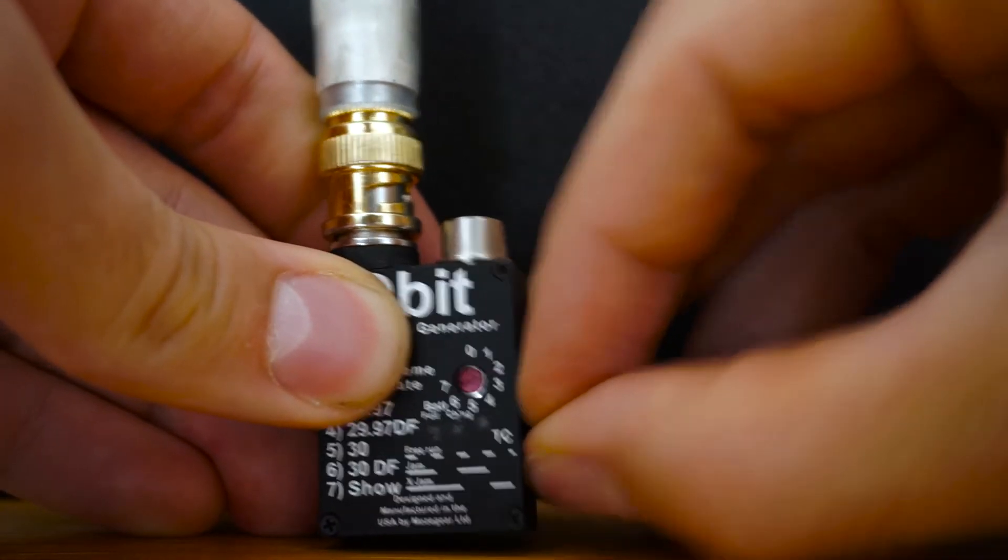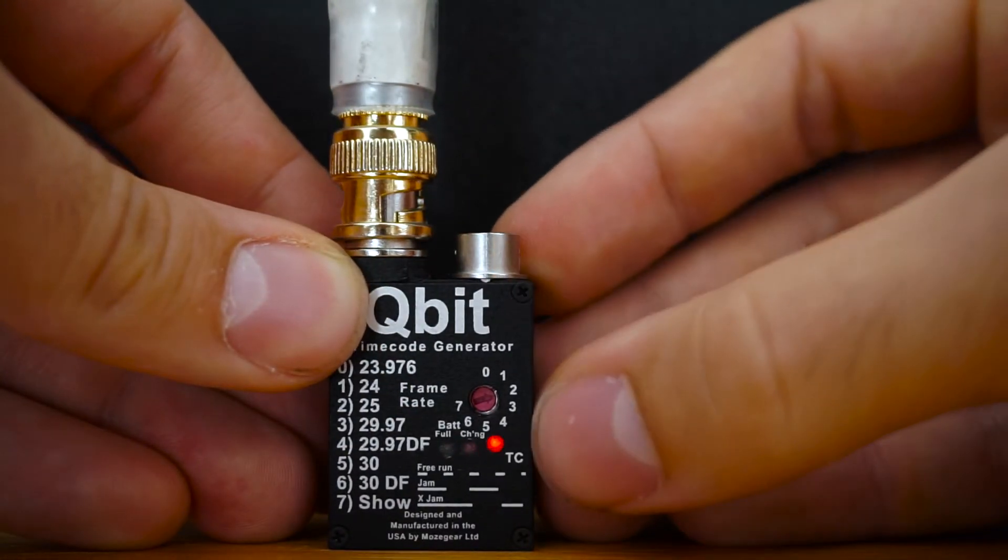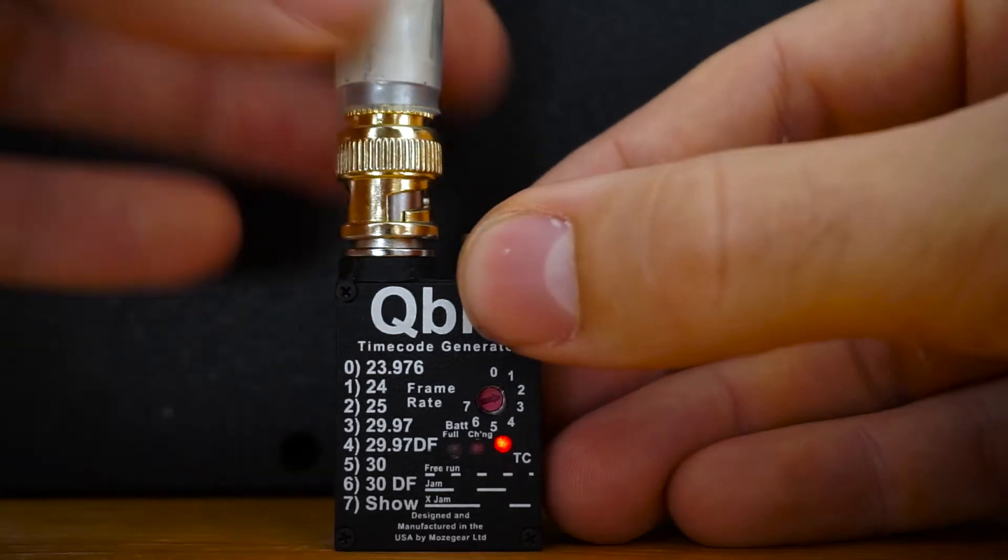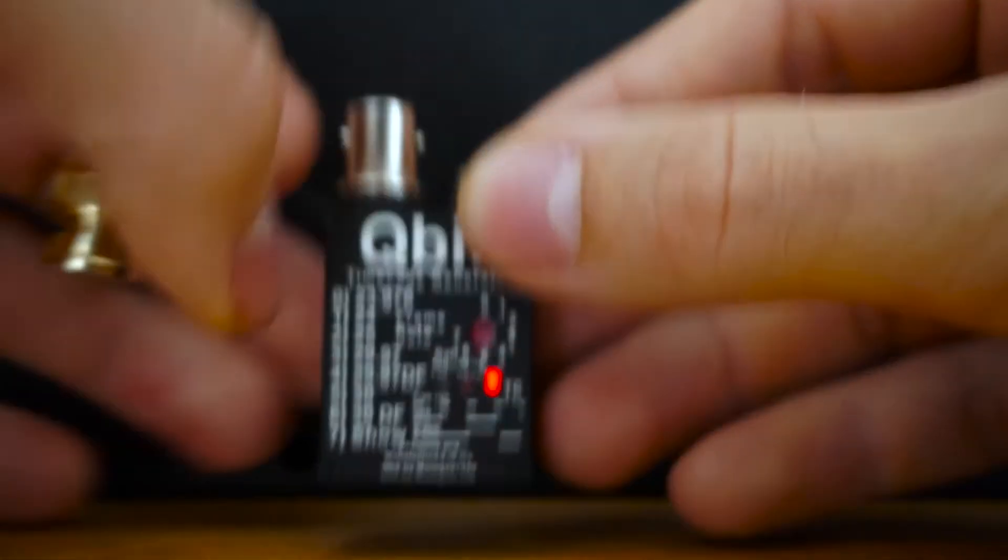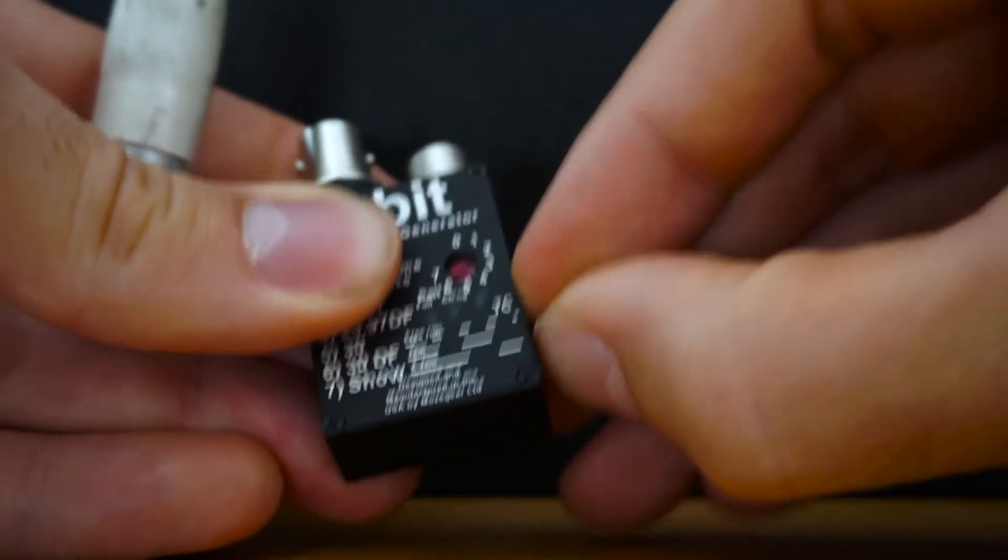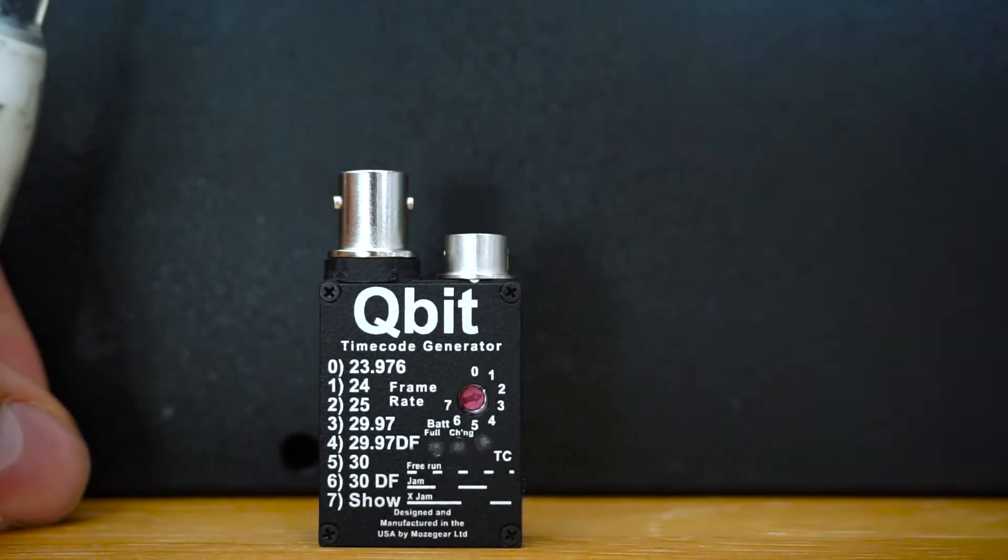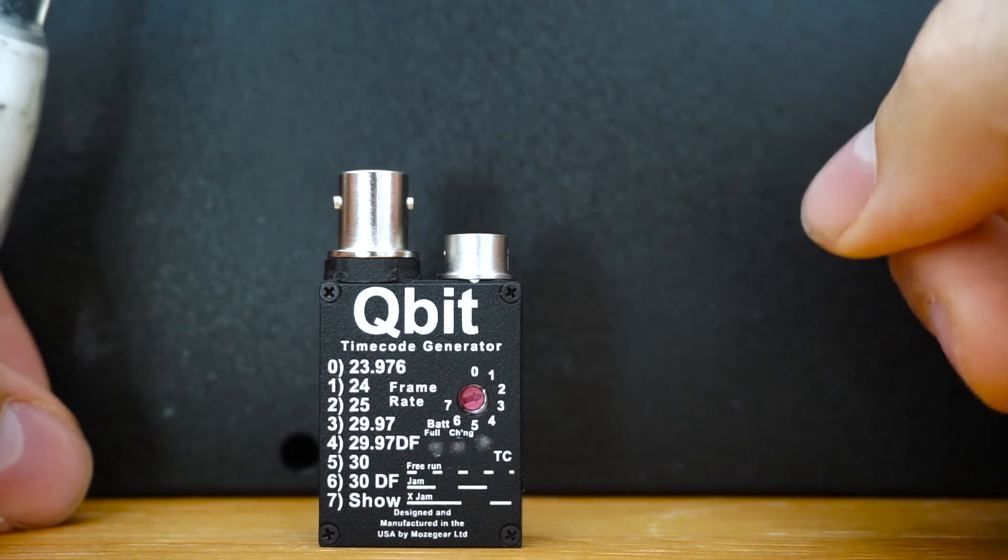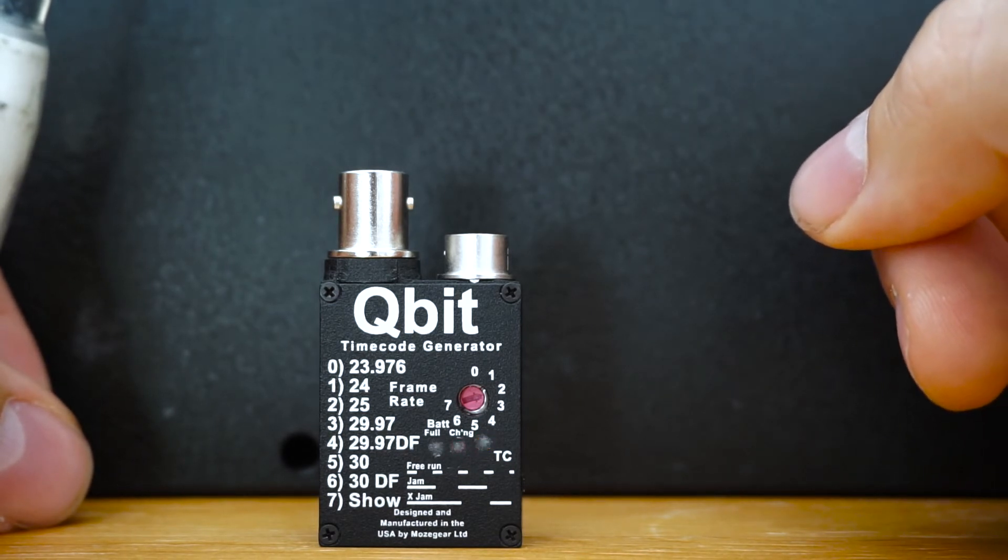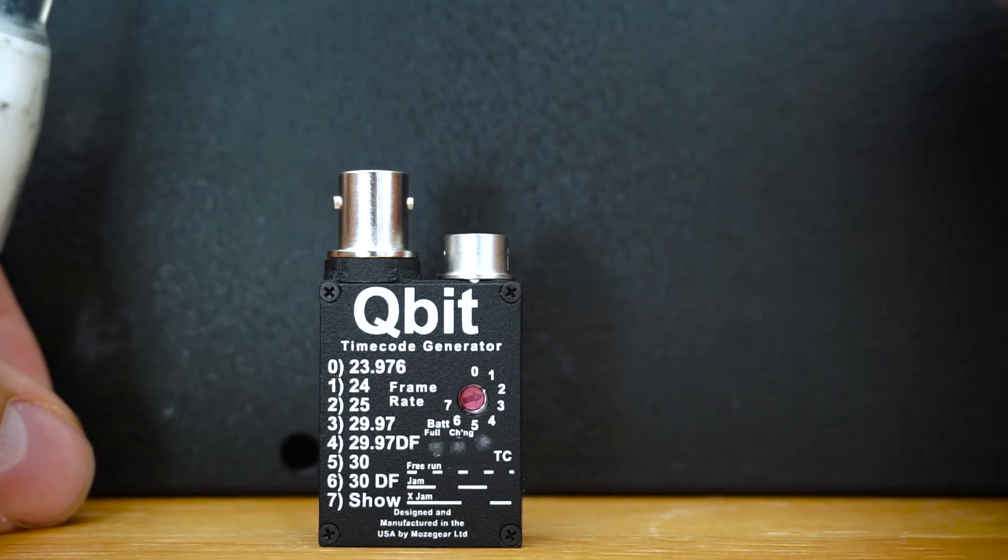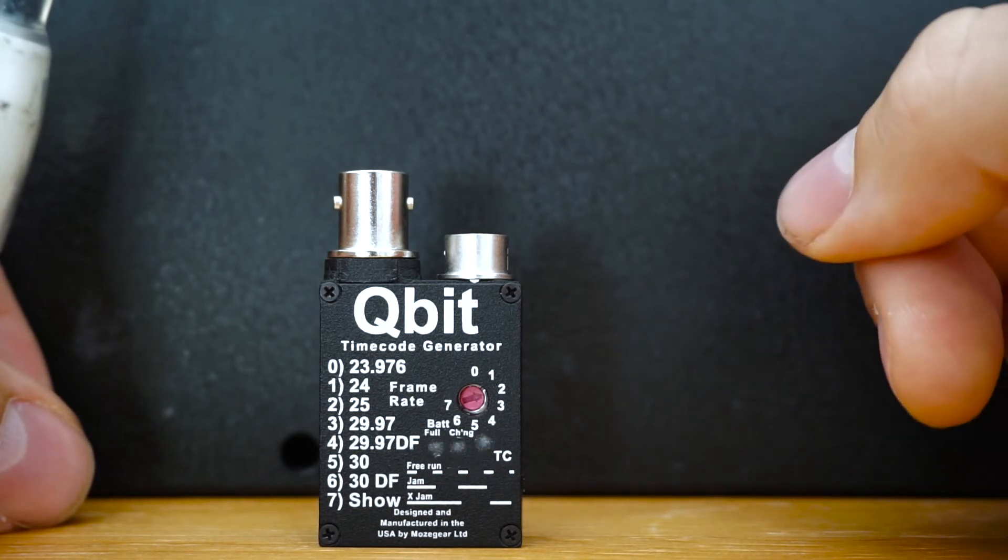Now you can see it's properly jammed. What happens when you first turn it on - you see how it slowly oscillates for a bit? Then it sets itself into free run mode. What free run does is start the timecode from a default time of 01:00:00:00 and just start counting on its own.